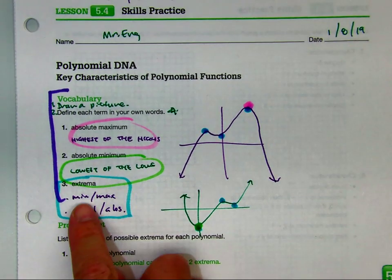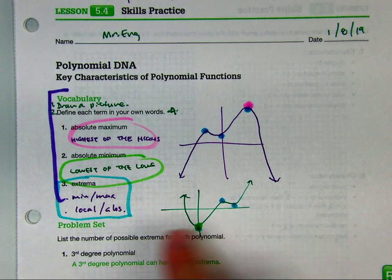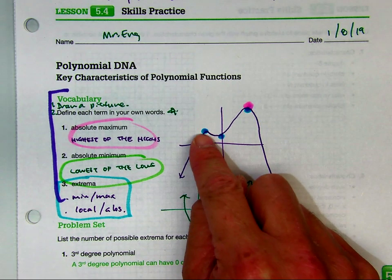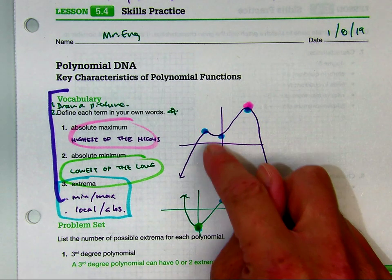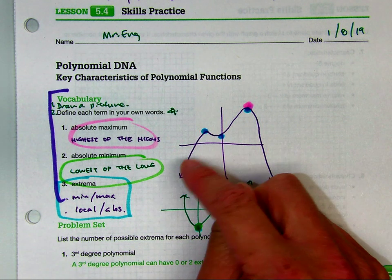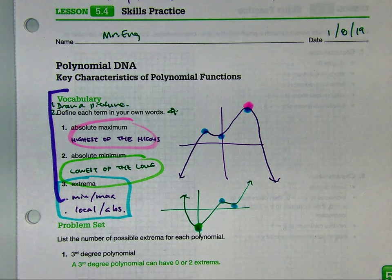Extremas are mins and maxes, local and absolute, so basically any time there is a change from increasing and decreasing, or in student friendly words, that's either a mountain peak or a valley.